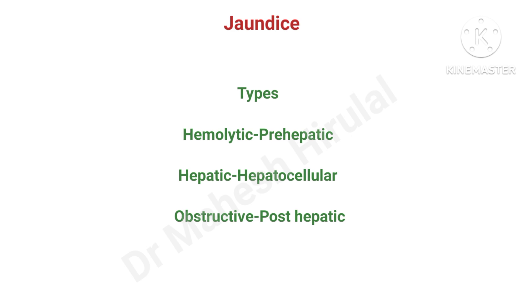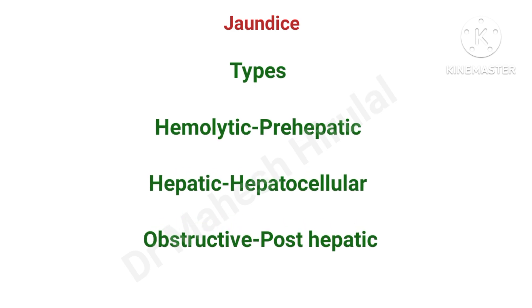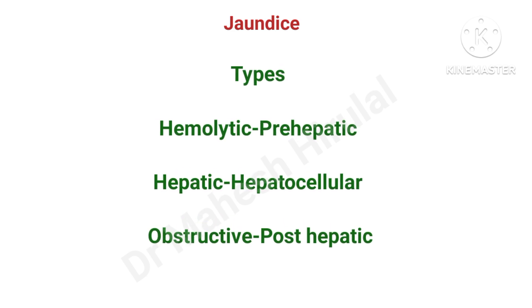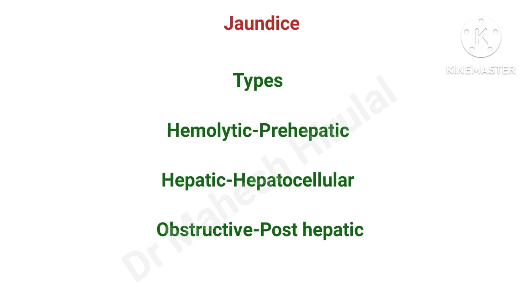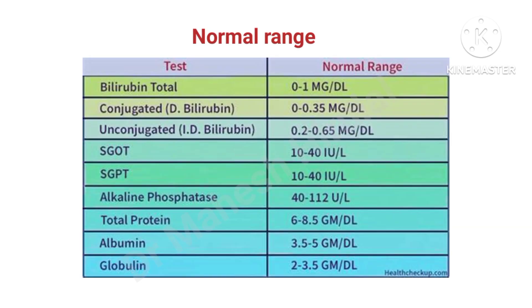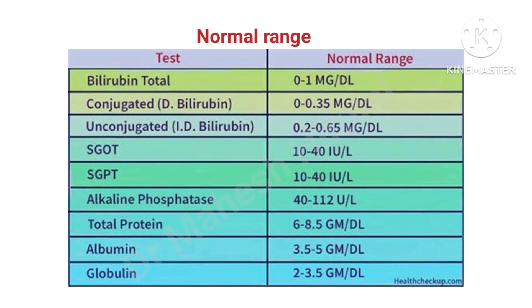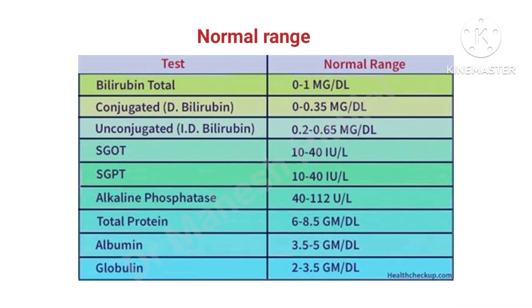There are 3 types of jaundice. The first is hemolytic, also called prehepatic jaundice. The second is hepatic or hepatocellular jaundice. The third is obstructive, also called posthepatic jaundice. This is the normal range of LFT — note there may be slight changes in reference ranges from laboratory to laboratory.